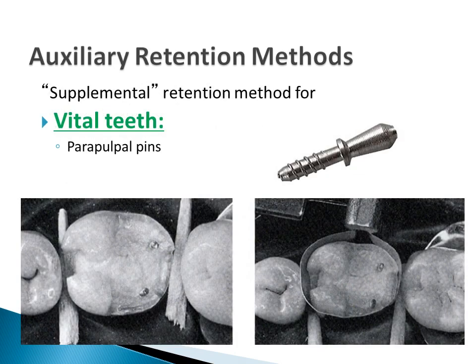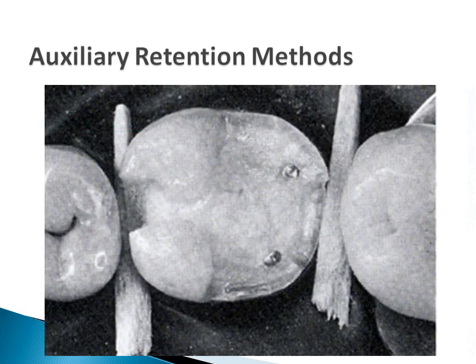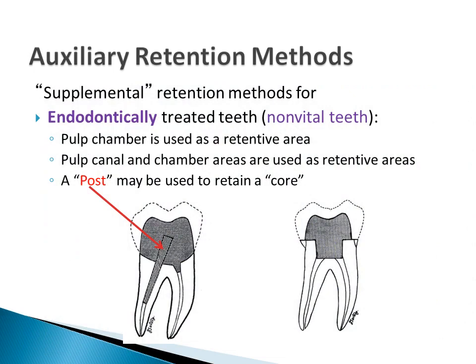When the tooth is vital, a parapulpal pin is an option. 'Para' means beside, adjacent, or near — so these pins are adjacent to the pulp. For non-vital teeth, we have another retentive method named a post. Pins are parapulpal, and posts are within the pulp space of an endodontically treated tooth.